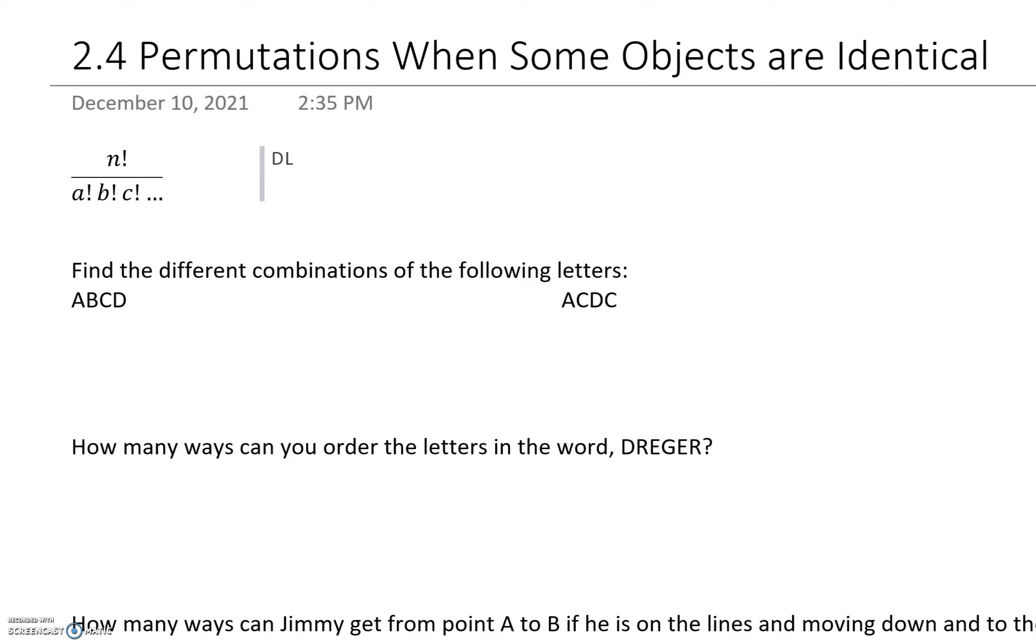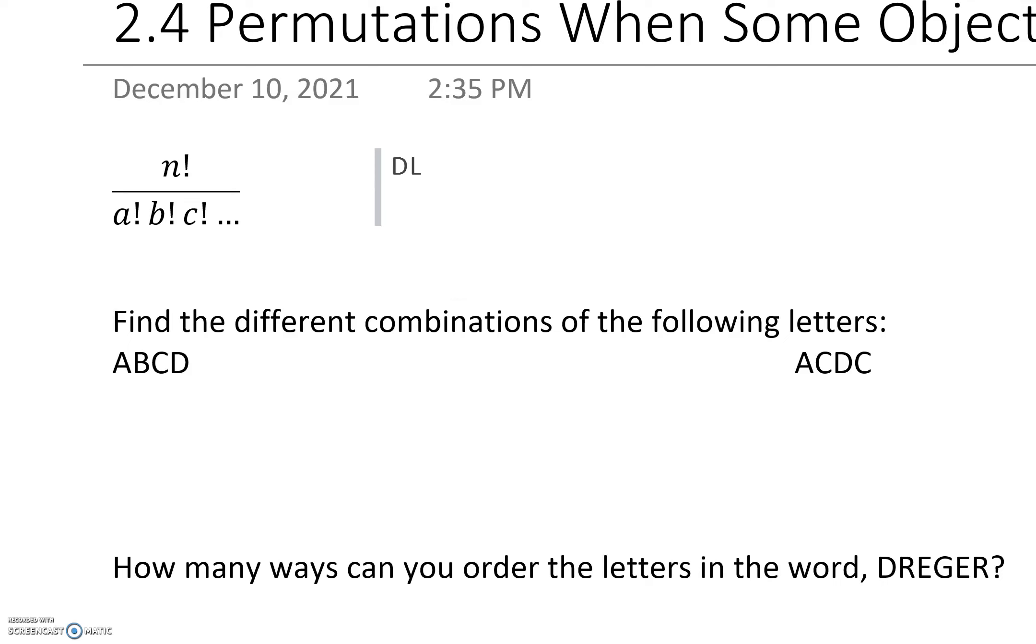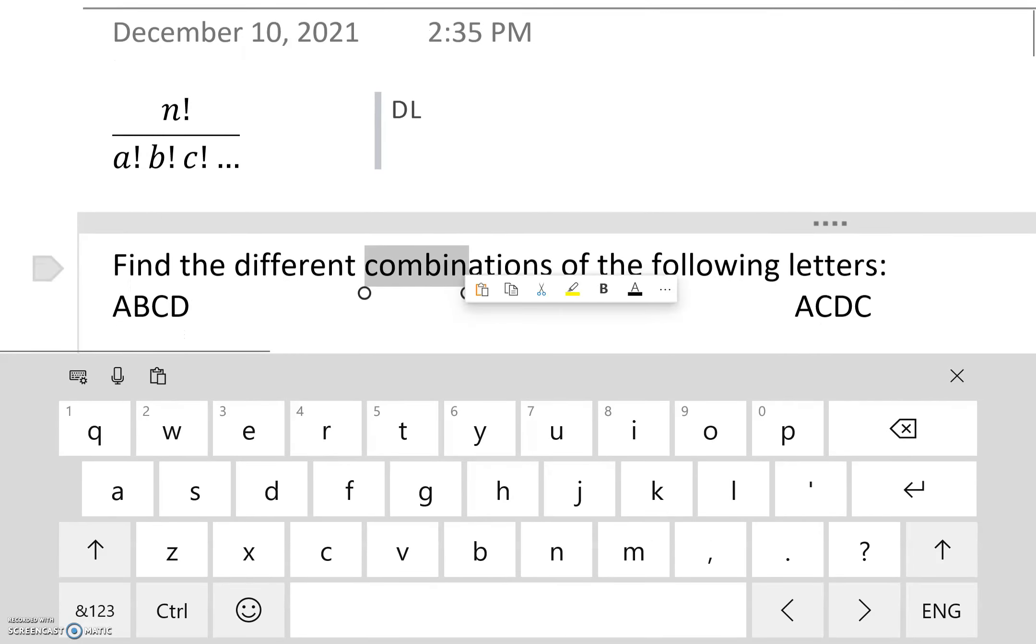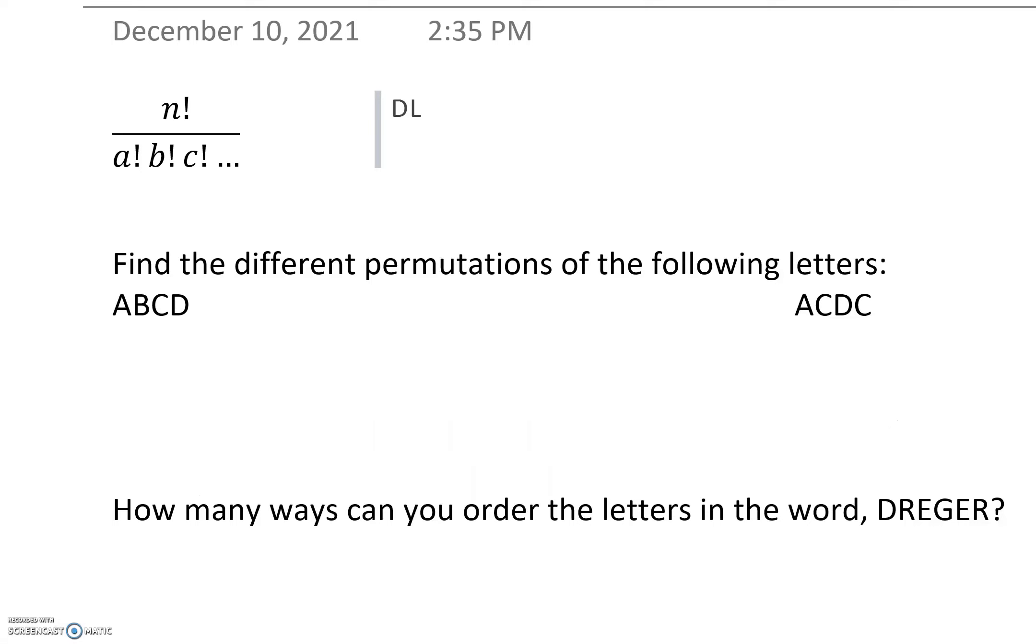We have a formula to keep in mind that is different from our formula for 2.3 when all objects are different, are distinct. Let's take a look at how this changes. Find the different permutations or the different ways that they can be combined.